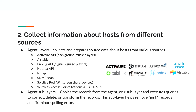Step two: collect information about hosts from different sources. The second step collects information from different available sources, which can be added or modified over time. Some agents that WeWork uses are ActiveAir API, Airtable, Nplug API, NetBox API, Nmap, SNMP scan, Solstice Pod API, and wireless access points over API or SNMP. The information from each agent is collected, parsed, and stored into a specific table for a source agent original, allowing the data to be used in the next step — agent sublayers.